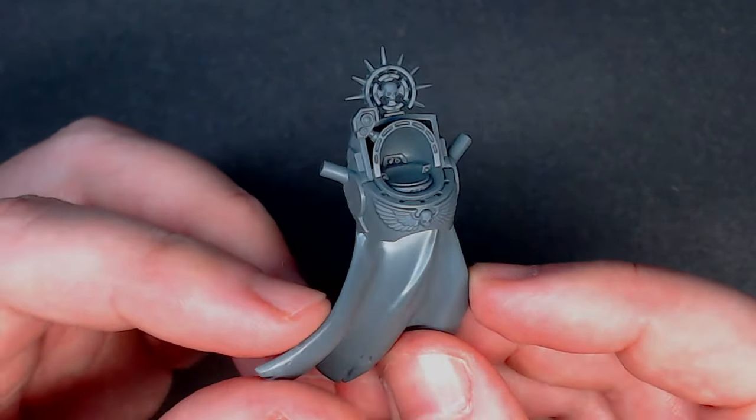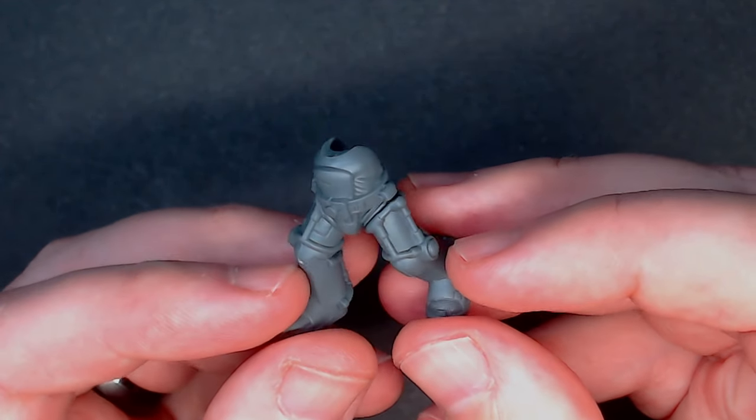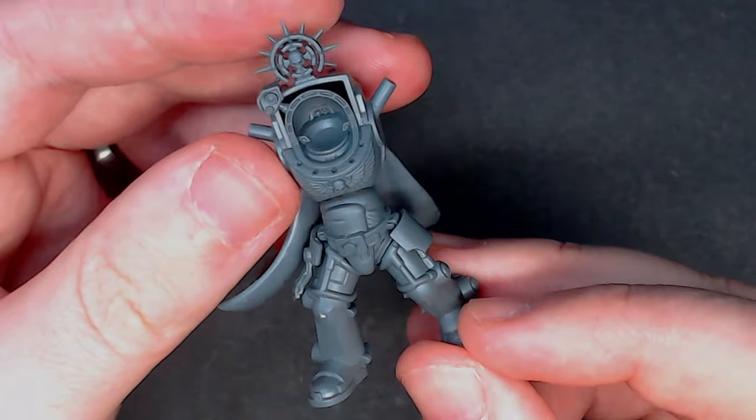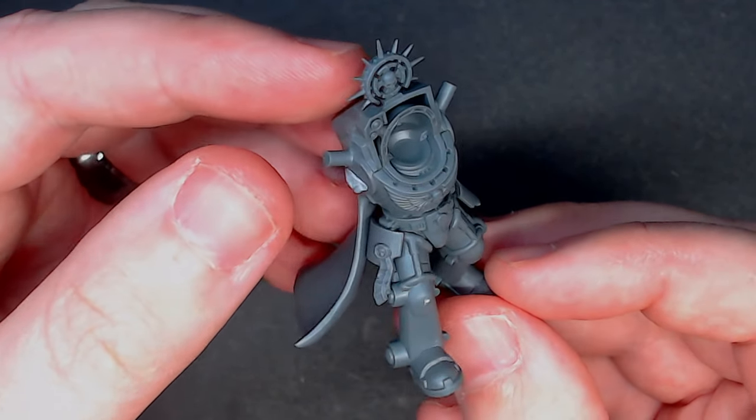For the legs I used the ones that I'm pointing at right now as I like the idea that he's walking forward very similar to the original model. I then clipped them from the sprue, tidied them up and glued them together before test fitting them against the torso.